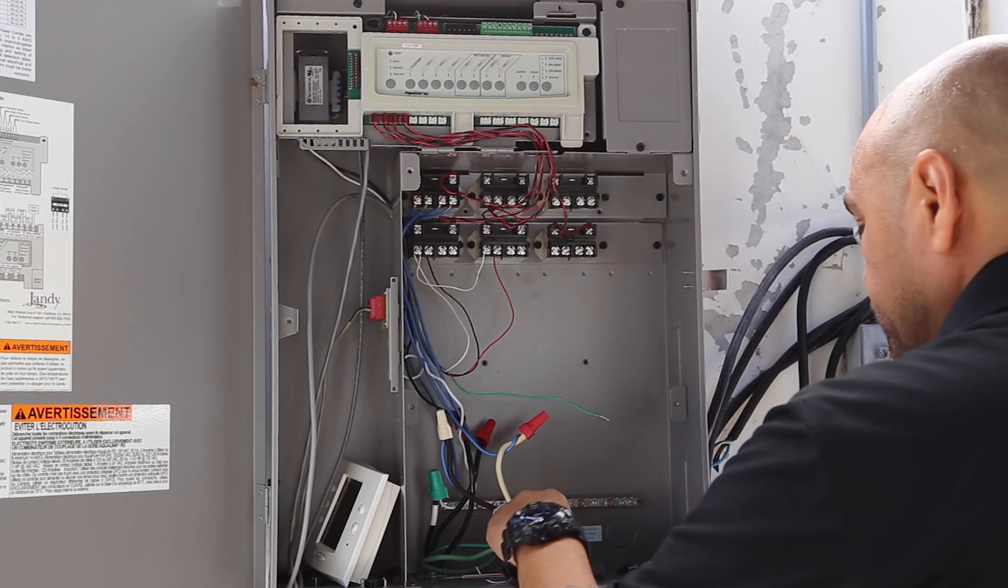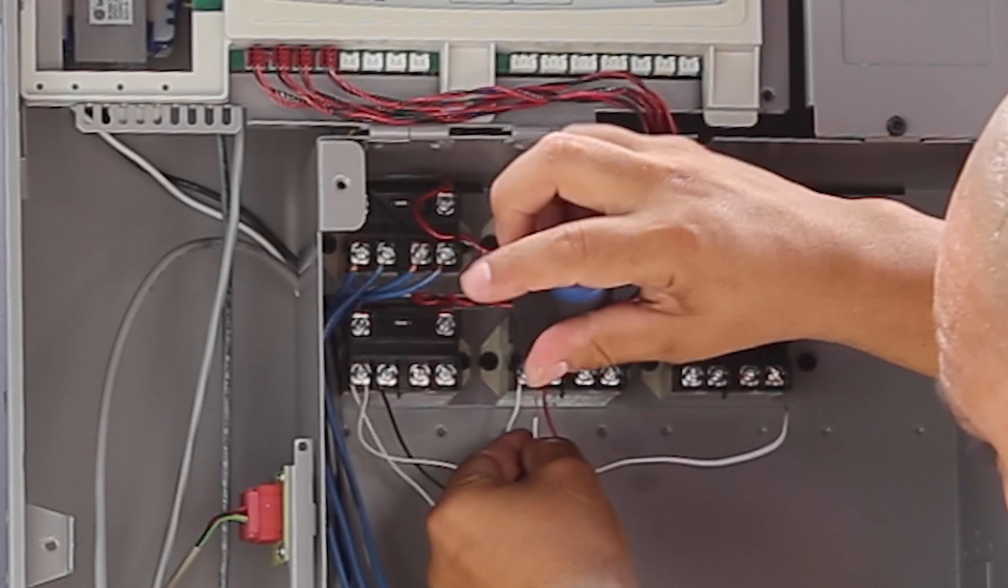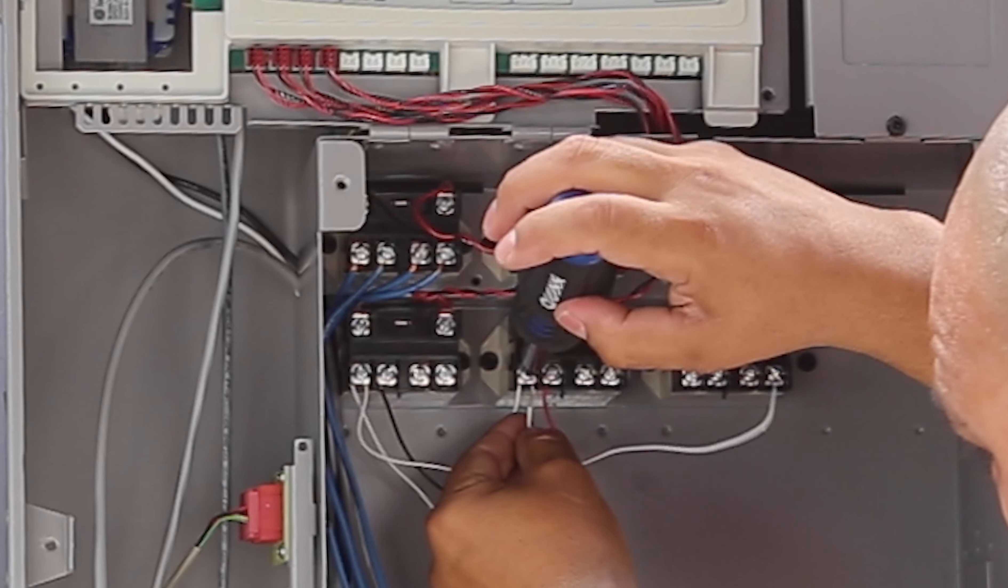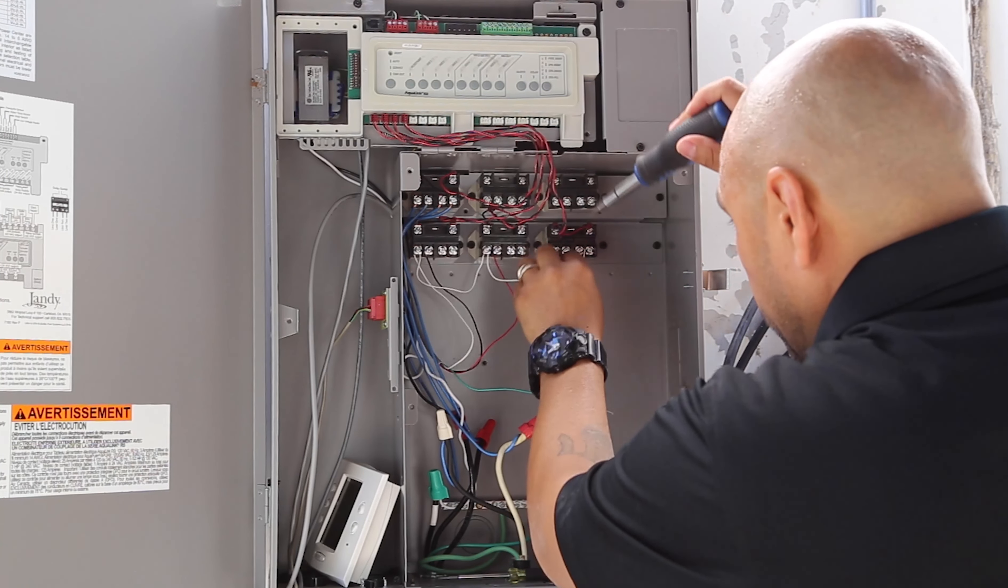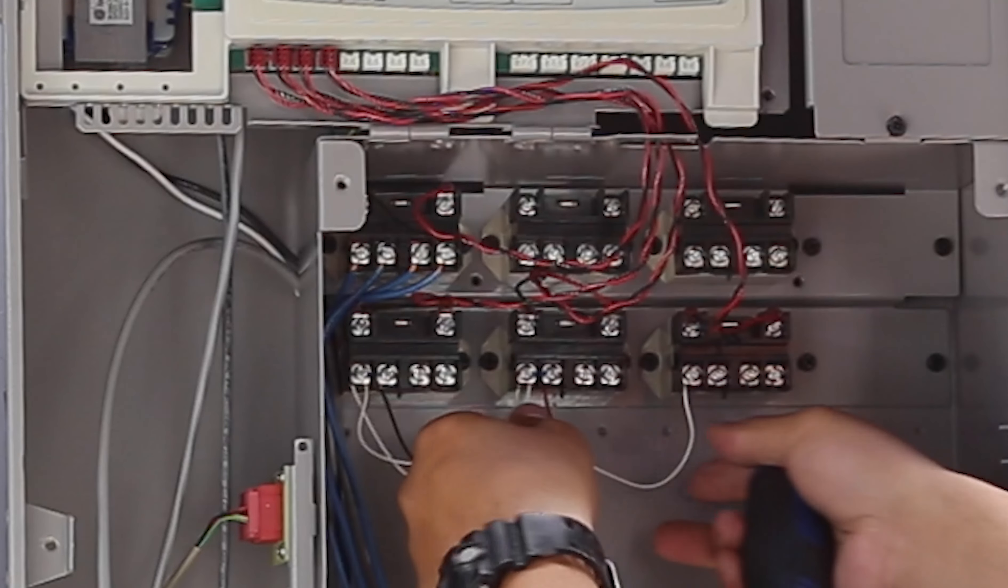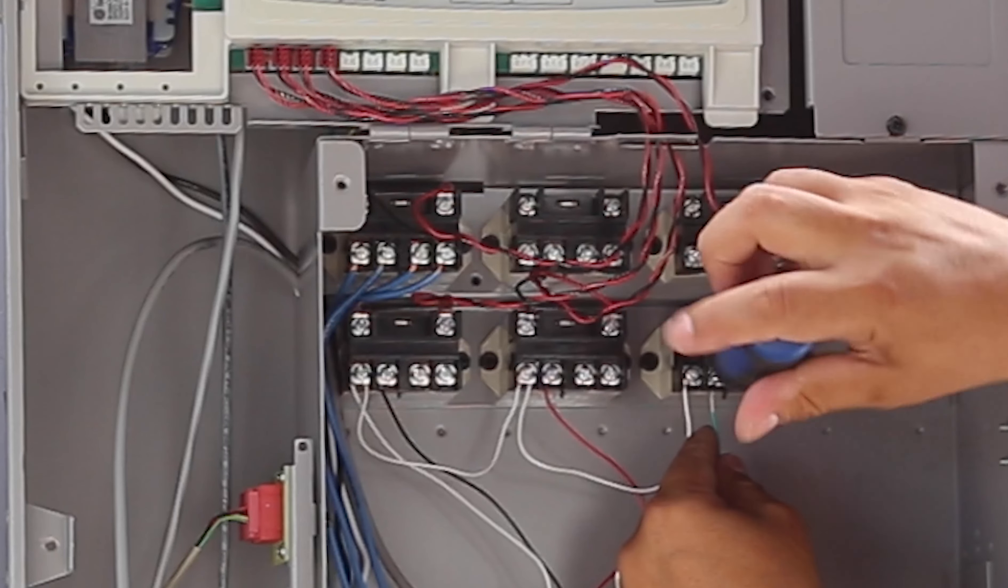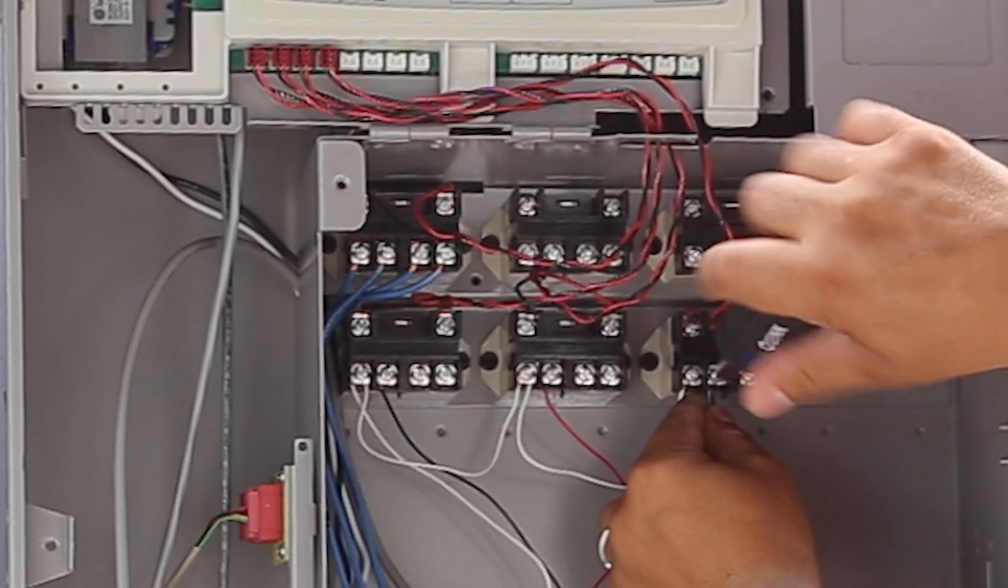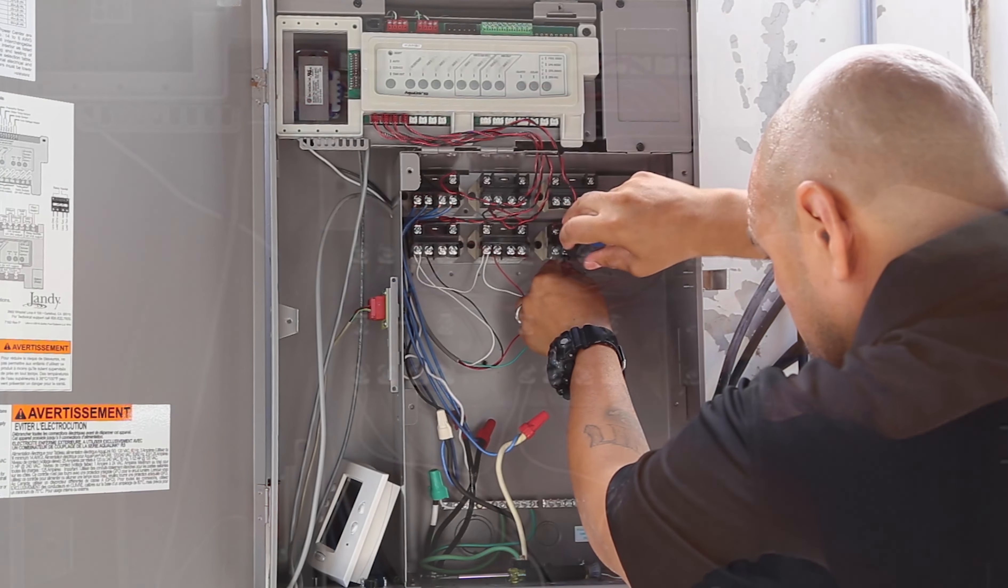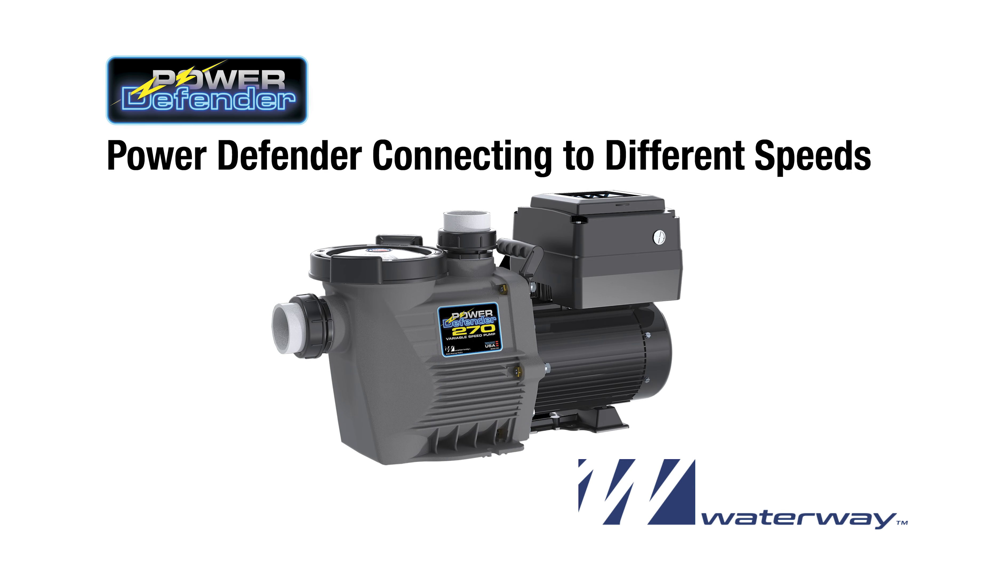In order to use a third one, we will loop our line in 12 volts to our third relay for the line in. Then our third speed from the input of the power defender to our load side of the relay, which will give you operations to three different speeds.